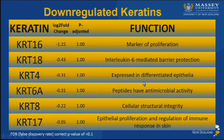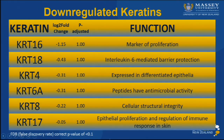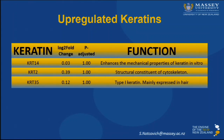Looking at the keratin findings: keratin-18, slightly down-regulated, is involved in interleukin-6-mediated barrier protection. Keratin-6B, also down-regulated, is involved in peptides that have antimicrobial activity. Keratin-17 manages epithelial proliferation and regulation of immune response in skin. Among the up-regulated keratins, keratin-14 enhances the mechanical properties of keratins in vitro, and may be doing the same for the epithelium of the teat canal.